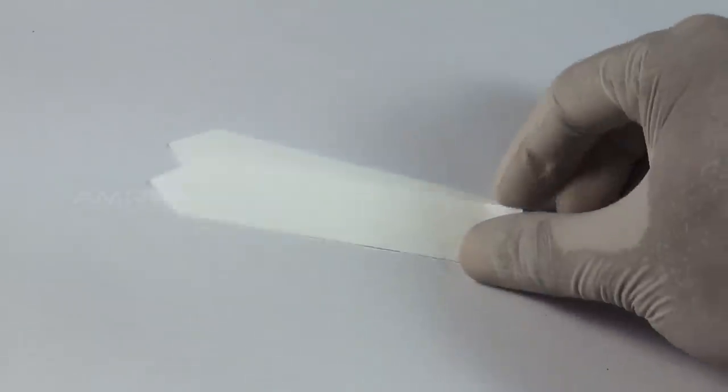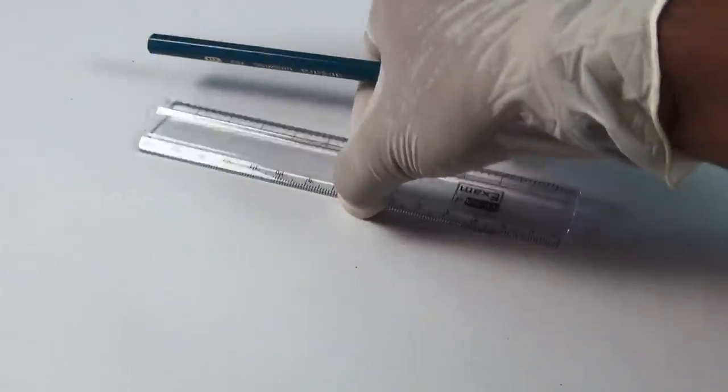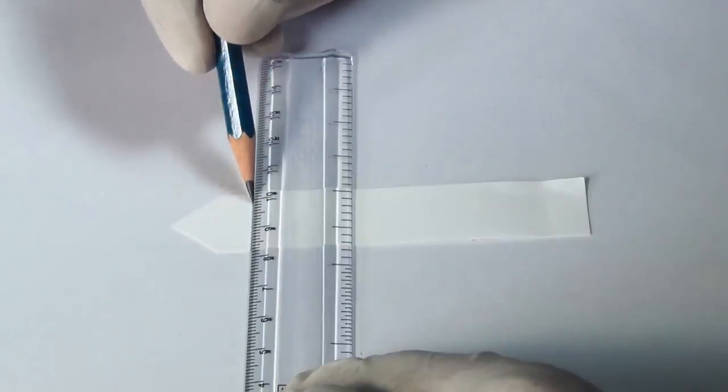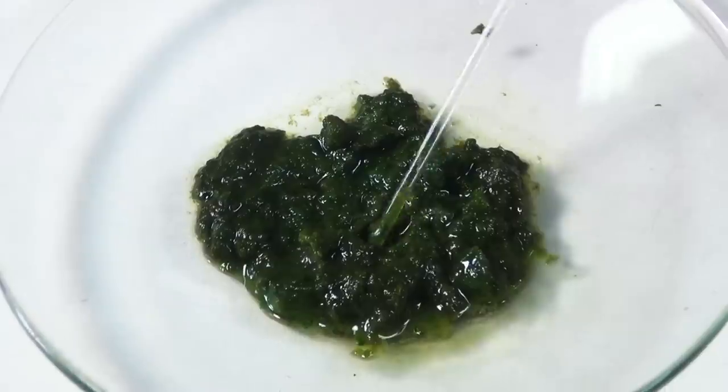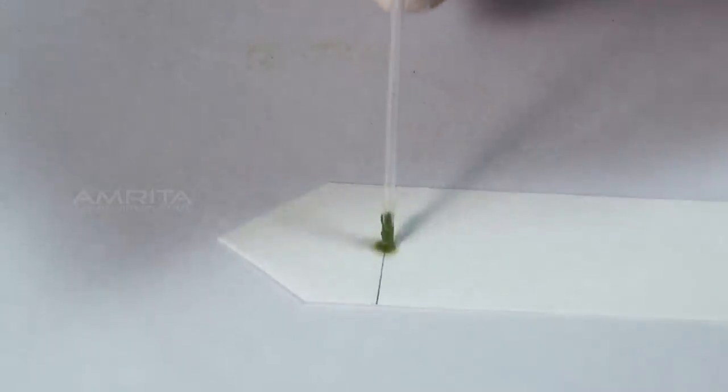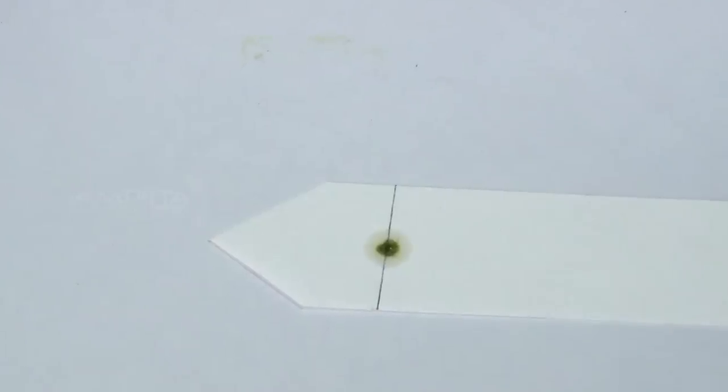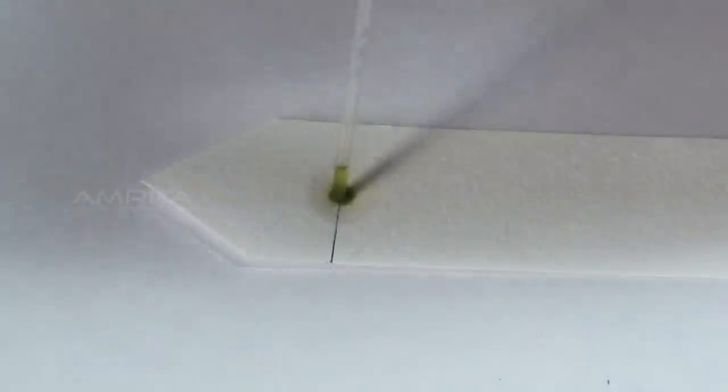Take a strip of filter paper having a narrow notch at one end. Draw a horizontal line with the pencil about 2-3 cm away from the tip of the notch. Put a drop of the pigment extract in the middle of the line with the help of a capillary tube. Allow the drop to dry and repeat till 4 or 5 drops are placed on the paper.